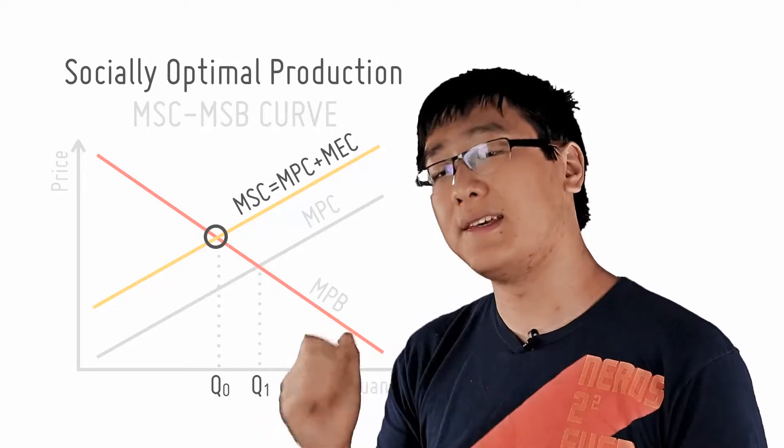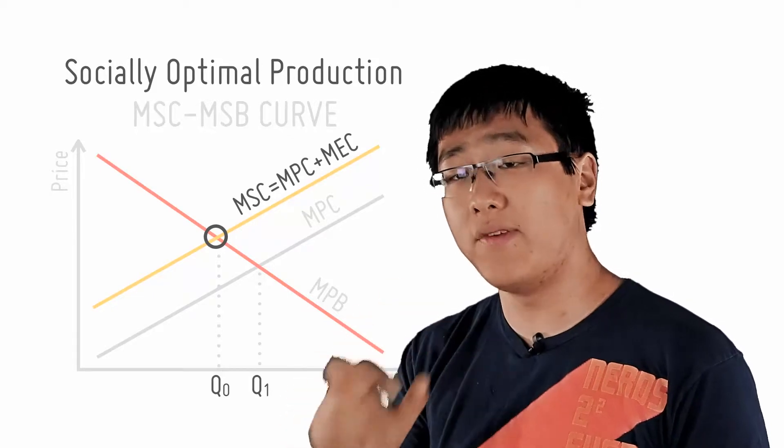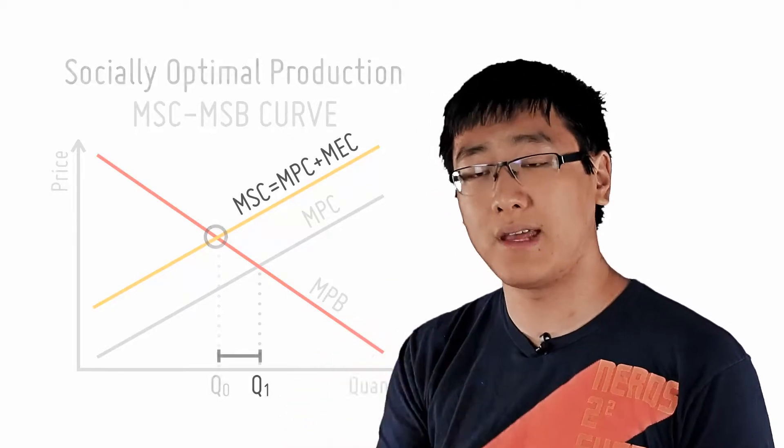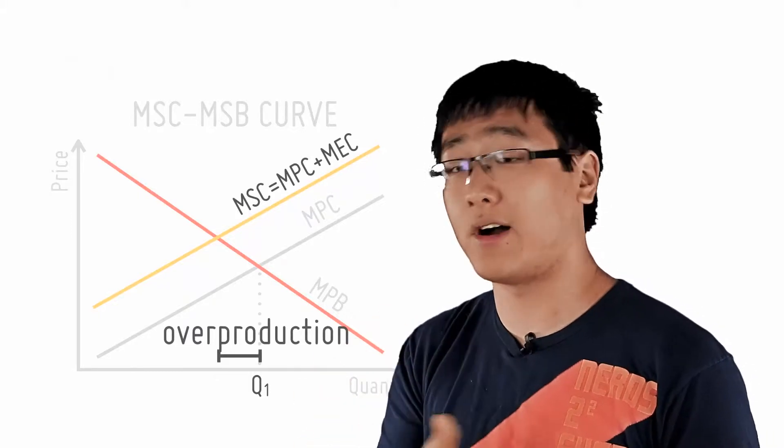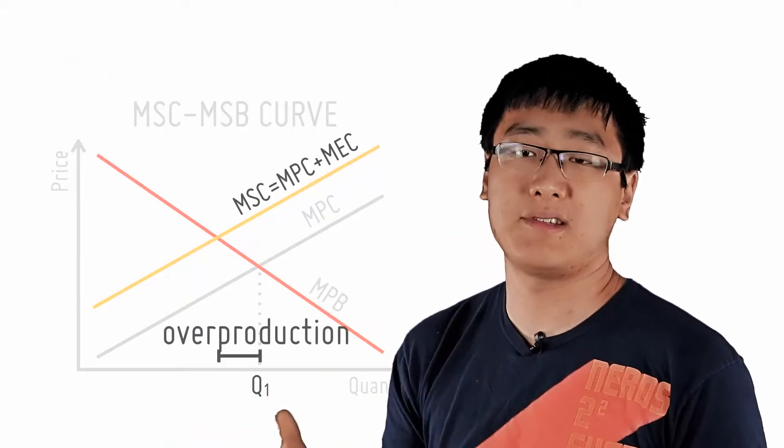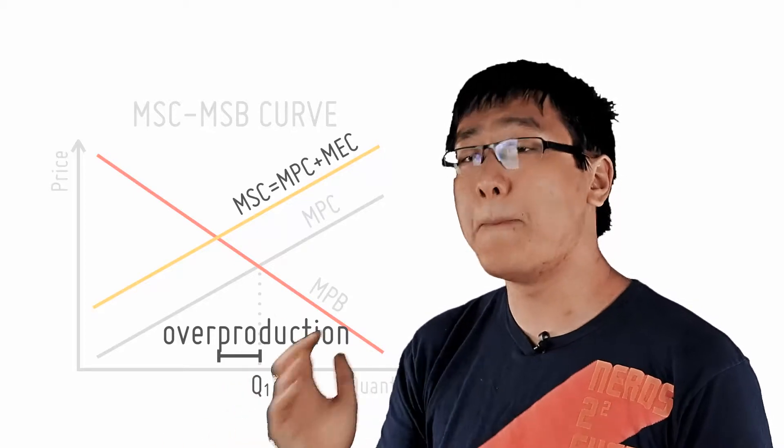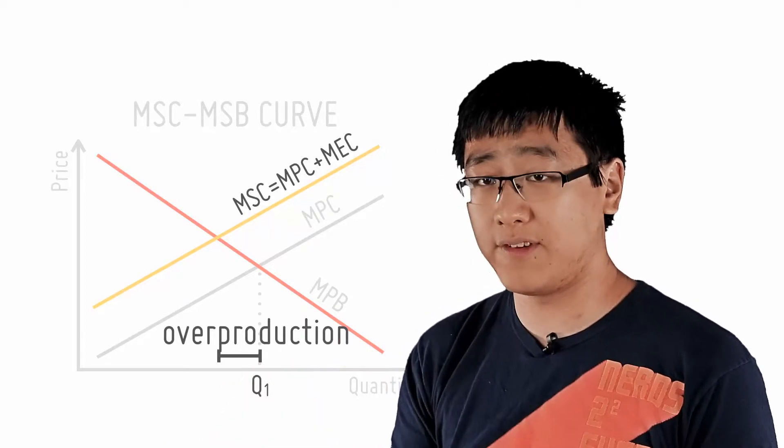Here, we can see market failure. The firm obviously overproduces because it does not take into account external cost. Considering only private cost and benefit, the firm only produces at Q1 and hence it overproduces, above the level which is allocatively efficient.